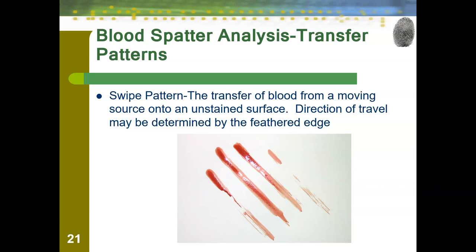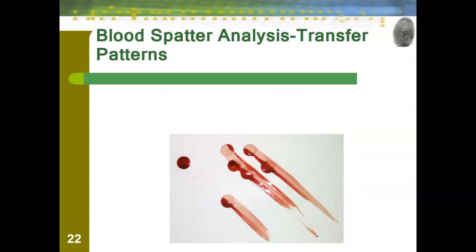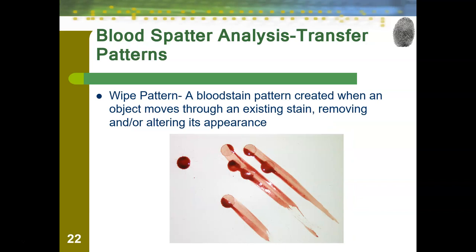This is compared to the wipe pattern, which is a bloodstain pattern created when an object moves through an existing stain, removing or altering its appearance. In a wipe, we already had passive drops on the surface, and then someone — likely a hand — disturbed the pattern. But you can still faintly see the original pattern. This helps us establish a timeline of when things occurred.